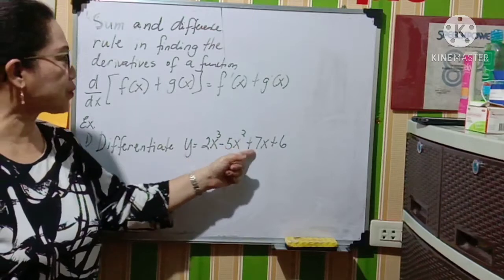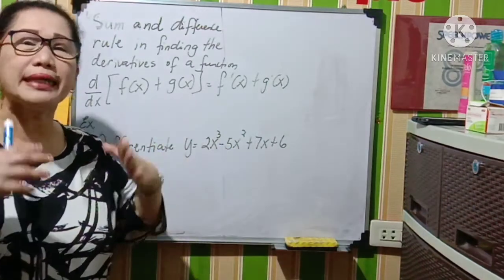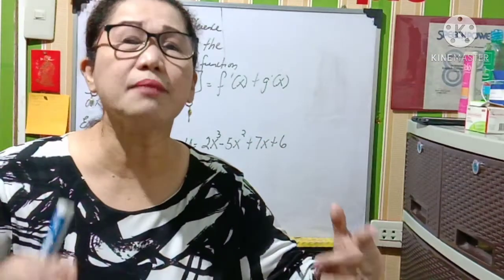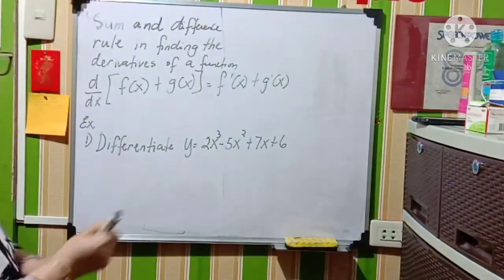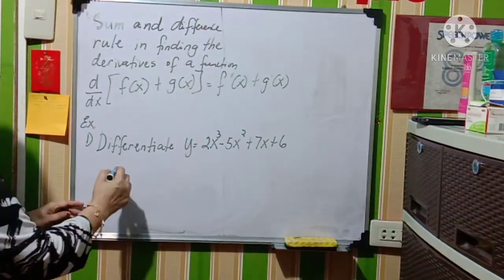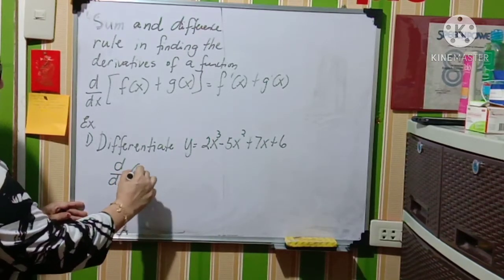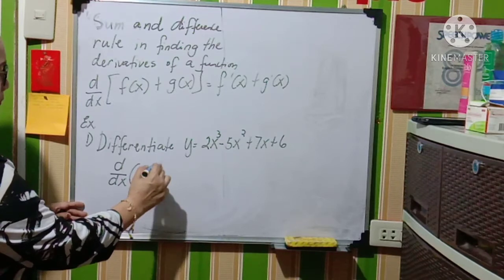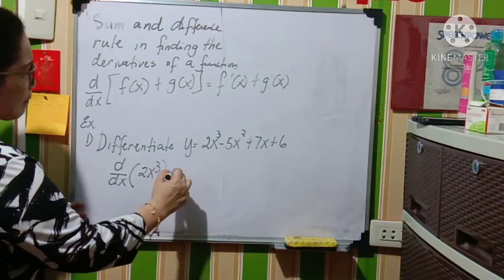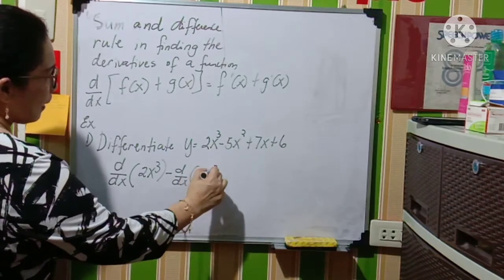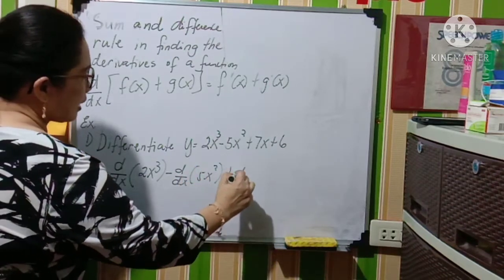We will be getting the derivative of every term. So the solution now is d over dx times the quantity of 2x cube minus the derivative of 5x squared plus the derivative of 7x plus the derivative of 6.